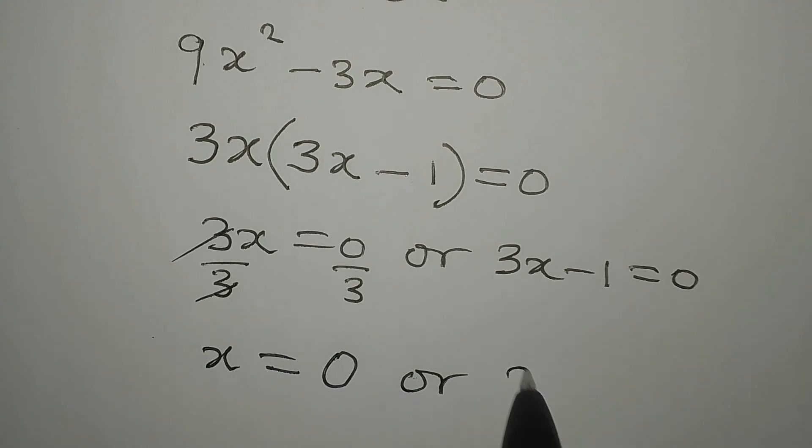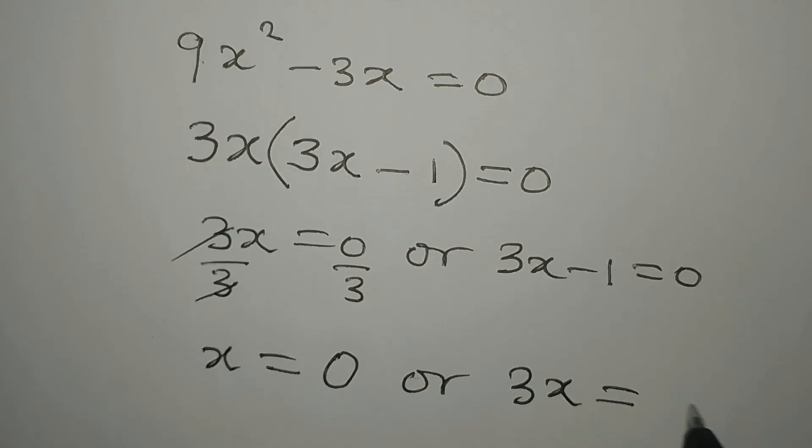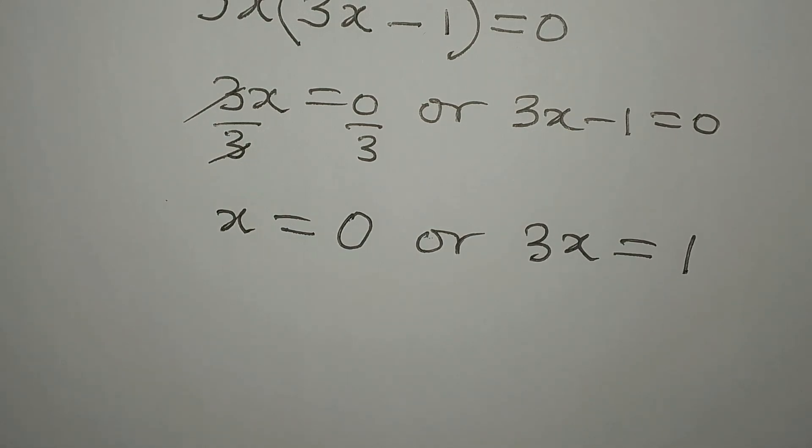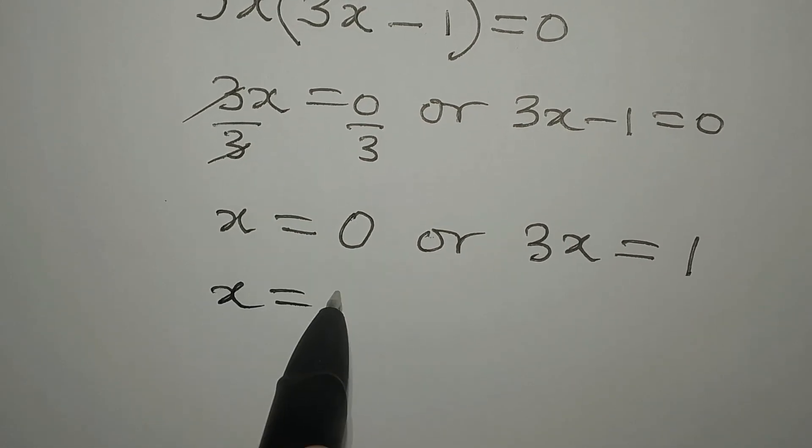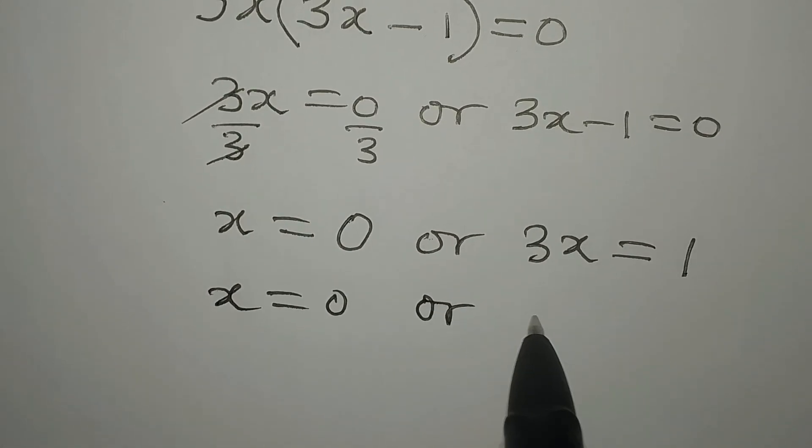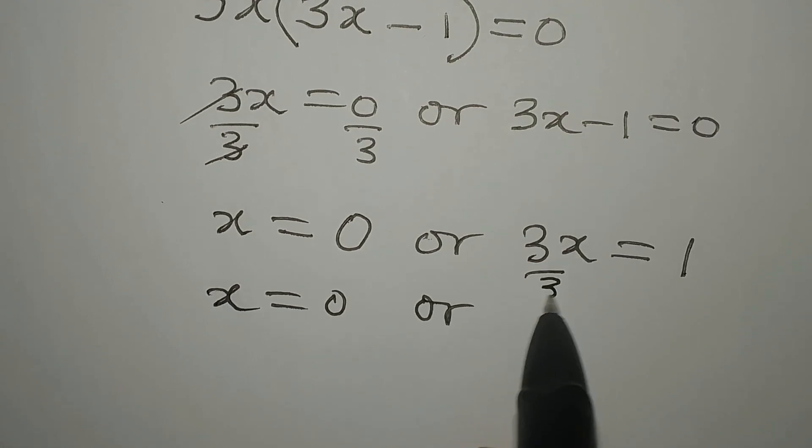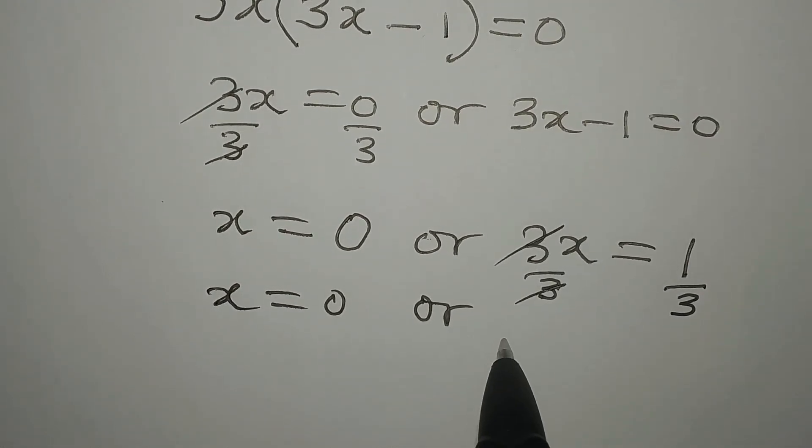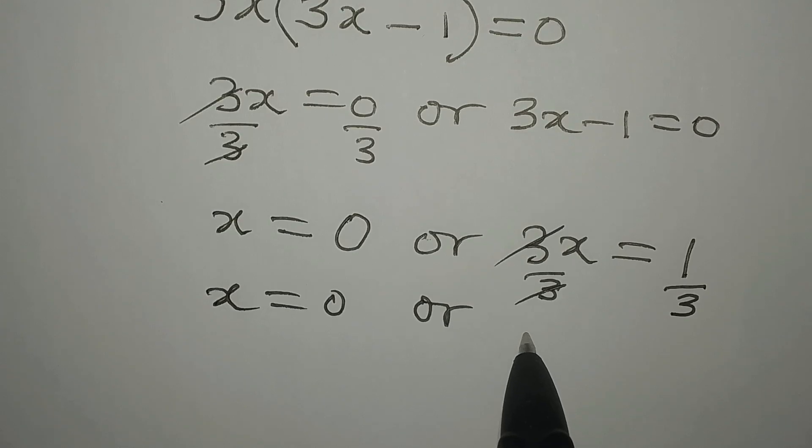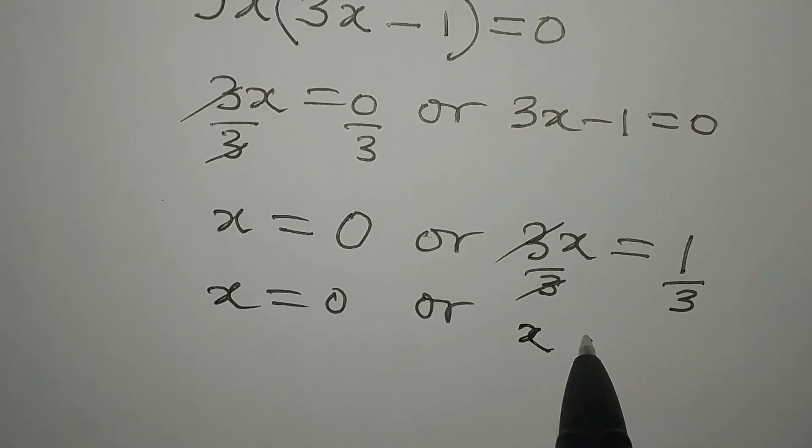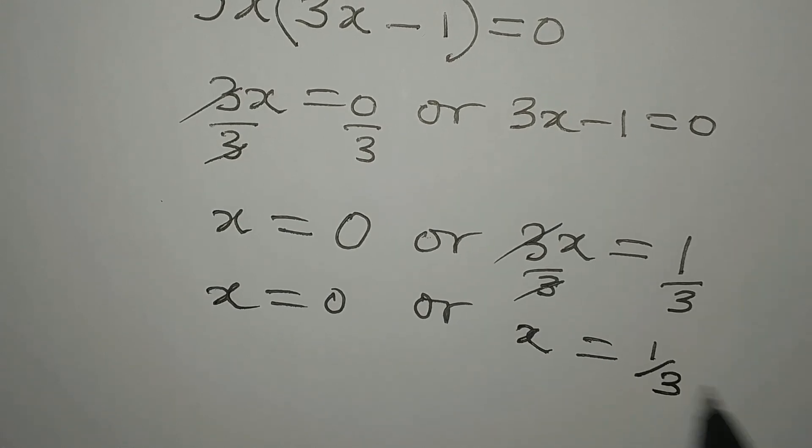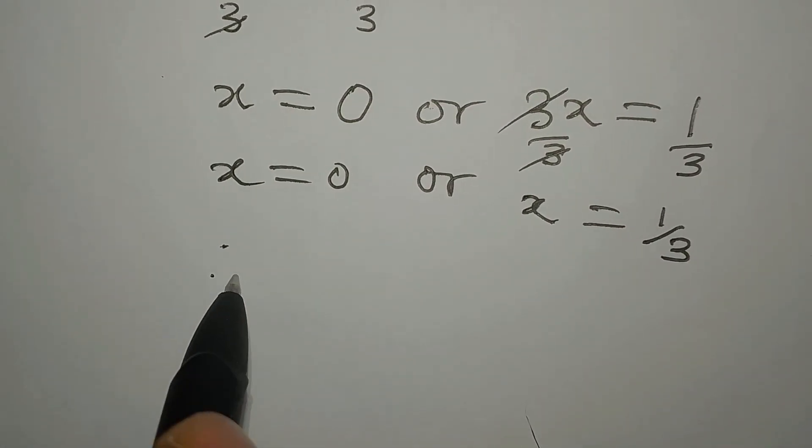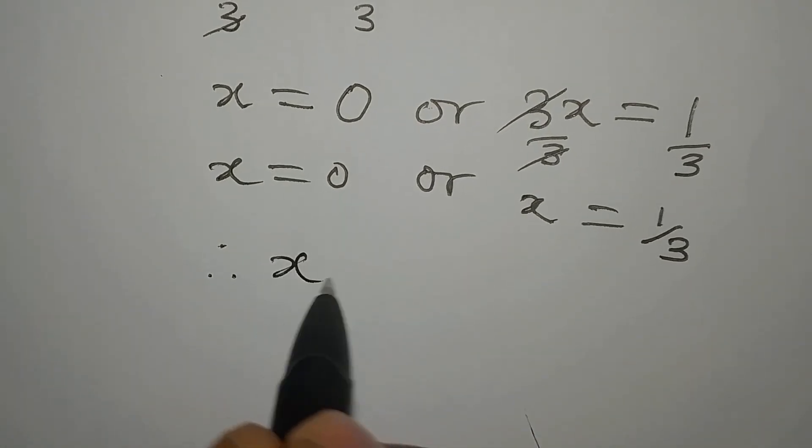Or on this side, if 3x minus 1 equals 0, we can divide by 3 on both sides, so x here equals 1 over 3. Therefore, x equals 0 or 1 over 3.